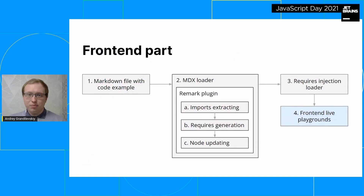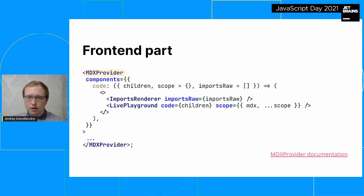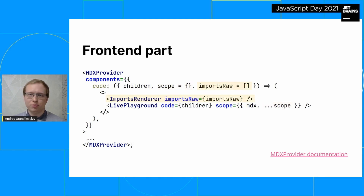The build part is actually over. The final part takes place on the frontend: using MDXProvider for code elements, we forward the scope object from the props into any of the available ready-made playgrounds. This step only binds the MDX component with the playgrounds. Also, do not forget about the raw imports array to show to the user. At this point, the basic functionality is ready.